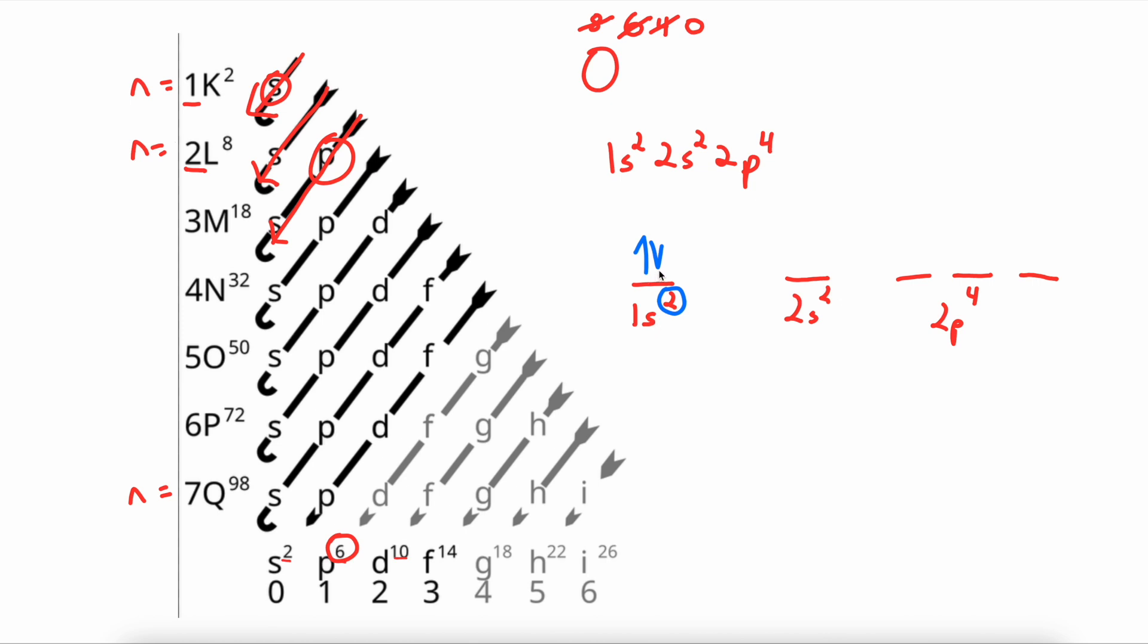An up arrow and a down arrow to symbolize the opposite spins. This S sublevel also has 2 electrons. So we go 1, 2. An up arrow and a down arrow to show our opposite spins.